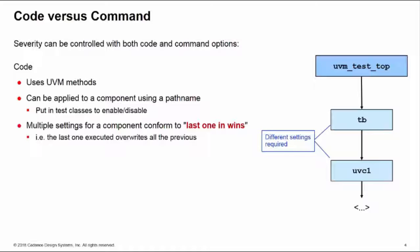The way to control these is to put them inside of a test class, and then you can enable or disable them by switching to different tests. For the code options, if you have multiple settings for an individual component these conform to a last one in wins. So the last setting executed overwrites all the previous settings for that particular component.